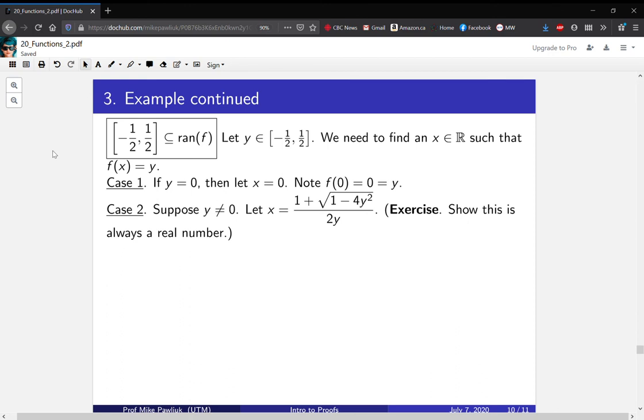Instead, let's look at the more interesting case where y ≠ 0. I think we should let x be this thing, (1 + √(1 - 4y²))/(2y). It's an exercise for you to show that this is always a real number. You can see, for example, that the denominator won't be 0 because y isn't 0, and you should check that this square root is always defined because y is in this interval. So both of those things will be used.